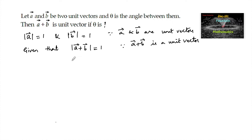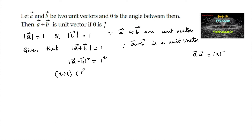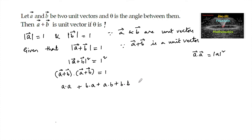Now squaring on both sides, mod of a plus b whole square is equal to 1 squared. Since we know that a dot a is equal to mod a squared, we can write mod of a plus b whole square as (a plus b) dot (a plus b), which is equal to 1. Expanding: a dot a plus b dot a plus a dot b plus b dot b equals 1. So a dot a is mod a squared.